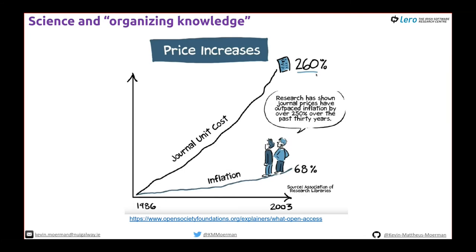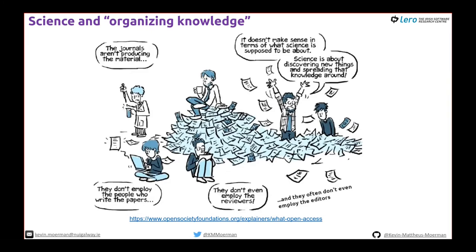Journal unit costs have gone up by 260% but inflation only about 70%, so it's not due to inflation. Costs are just going up to make more money from this very lucrative business of publishing scientific papers. The funny thing is journals aren't producing the material — we write the papers as scientists, they don't employ the reviewers, and editors quite often aren't paid. It doesn't make sense in terms of what science is about.